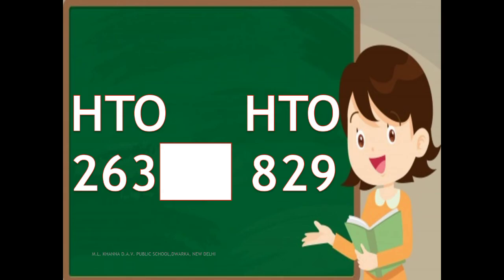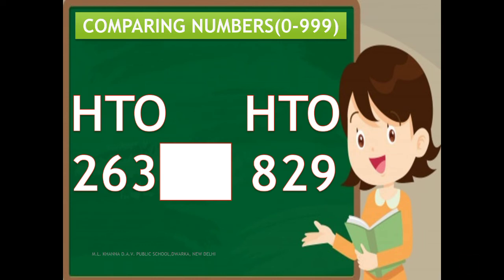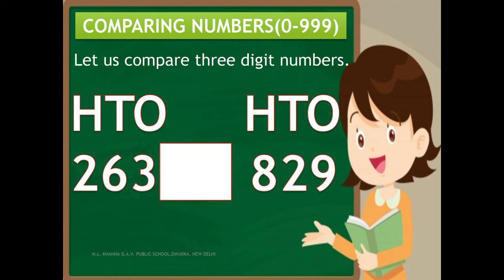Now let us see examples of comparing three-digit numbers. Let us compare 263 and 829. We start by comparing the leftmost digit, which is the hundreds place. In 263, 2 is at the hundreds place, and in 829, 8 is at the hundreds place. 2 hundreds are less than 8 hundreds, so 263 is less than 829.